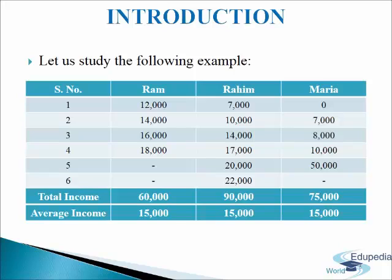Knowledge of only the average is insufficient. If you have another value which reflects the quantum of variation in values, your understanding of a distribution improves considerably. For example, per capita income gives only the average income. A measure of dispersion can tell you about income inequalities, thereby improving the understanding of the relative standards of living enjoyed by different strata of society.